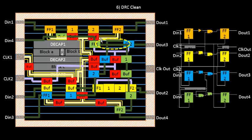During DRC clean, there is an additional concern: the existing routes had timing estimations associated with them, but the DRC clean step may move routes to other places, changing wire estimations and therefore affecting timing. This interaction between DRC fixing and timing will be discussed in the dedicated DRC section. This DRC clean step is performed after routing.